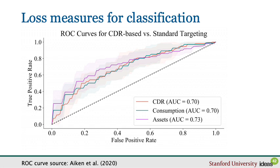The false positive rate is the proportion of false positives as a fraction of all negatives. The true positive rate is the fraction of true positives among all positives in the sample. By varying the threshold at which I classify a prediction as 1, I can plot the false positive rate against the true positive rate. The further I am to the top left of that graph, the better my prediction is.